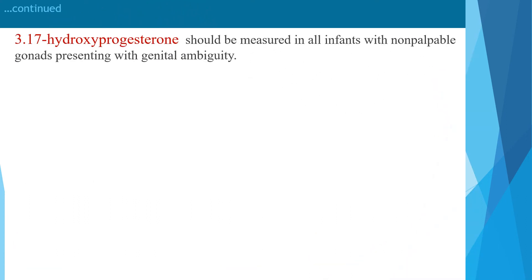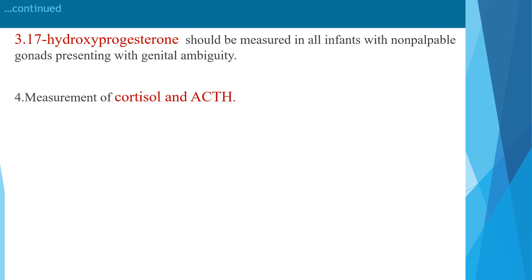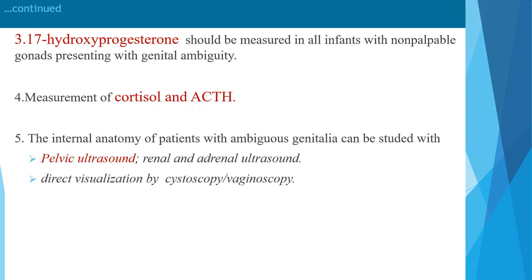Investigation for congenital adrenal hyperplasia involves measuring 17-hydroxyprogesterone, which should be measured in all infants with non-palpable gonads presenting with genital ambiguity, along with cortisol and adrenocorticotropic hormone (ACTH). The internal anatomy of the patient with ambiguous genitalia can be assessed with pelvic, renal, and adrenal ultrasound. On ultrasound, adrenal hyperplasia is seen if congenital adrenal hyperplasia is present. Direct visualization by cystoscopy or vaginoscopy can also be performed.